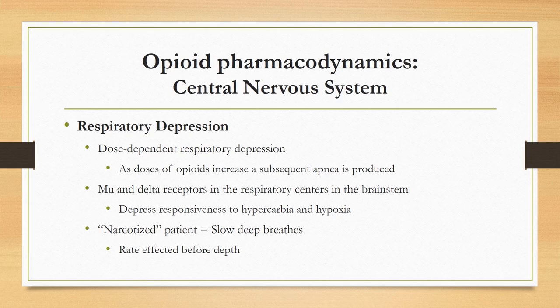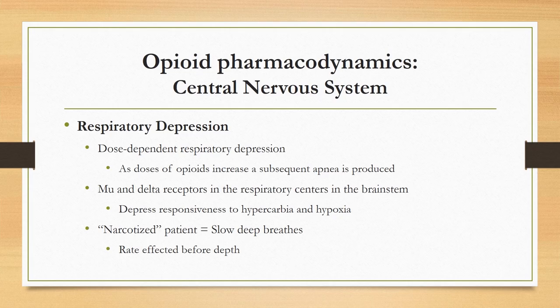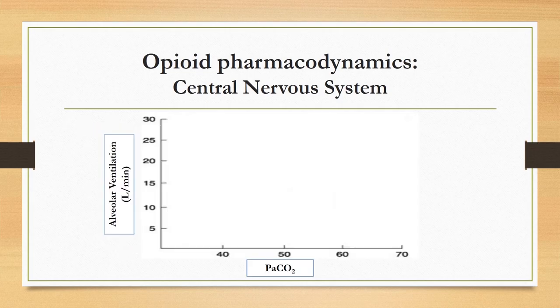Respiratory depression is another pharmacodynamic property. All opiate agonists produce a dose-dependent depression of respirations via effects on mu and delta receptors in the brainstem respiratory centers. The brainstem uses hypercarbia and hypoxia as natural stimulants to maintain normal ventilation; opioids cause a decreased response to both. Respiratory rate is affected first — the classic narcotized patient takes slow, deep breaths — and as doses increase, subsequent apnea is produced. Monitoring respiratory rate in the PACU provides a convenient way of detecting early respiratory depression. The goal in anesthesia is to leave some residual analgesia without respiratory depression when patients emerge.